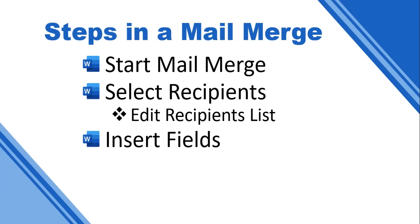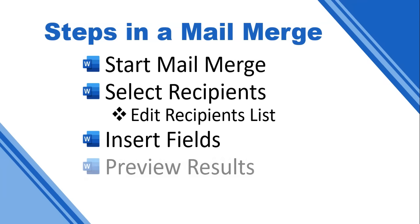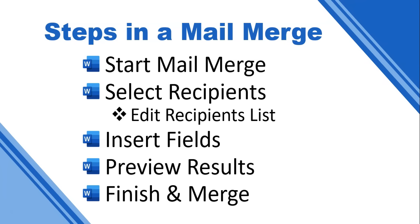Then we want to insert fields — the fields from our source or recipient. Maybe we want to insert their name, or their surname, or any details we've stored in our source document. Then we can preview our results to make sure everything is working — it will show us one of the first compiled letters with all the source fields in, so we can check the format. Once we're happy, we finish and do the final merge, creating a new document where all the letters are compiled, each customized with the fields from the source.